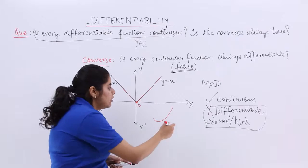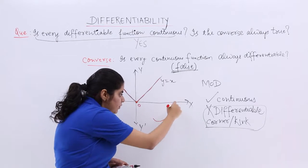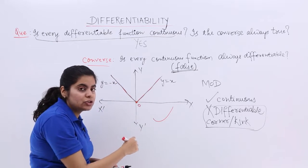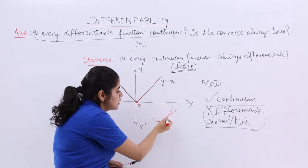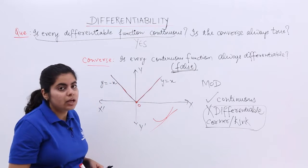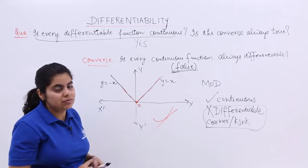But this curve, in this curve, any point you see, first thing it is continuous because you don't need to lift your pen or pencil. Any point you see, you can draw a unique tangent. If I have this point, there is a unique tangent here, right? So this is continuous as well as differentiable.